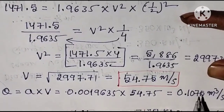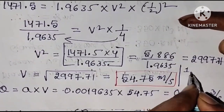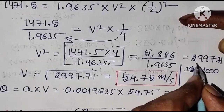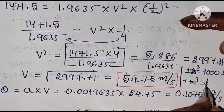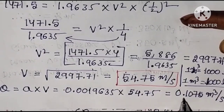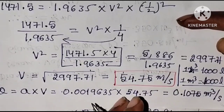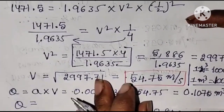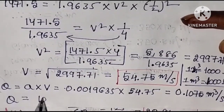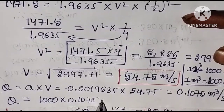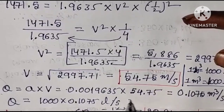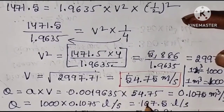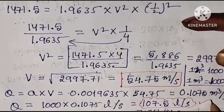Converting to liters: 1 m³ = 1000 liters. So Q = 0.1075 × 1000 = 107.5 liters per second. Therefore, the flow rate of water is 107.5 liters per second. This is the final answer.